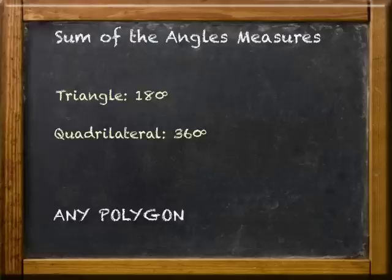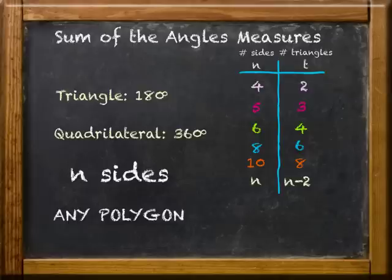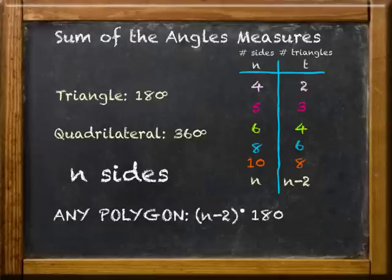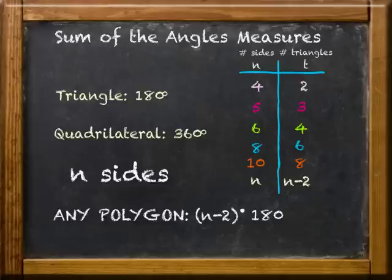Well, if the polygon has n sides, then remembering back from the table we just did, it contains n minus two triangles. And since each triangle contains 180 degrees, you'd have n minus two of those 180 degree figures. Written mathematically, it would be the quantity n minus two times 180. And there it is. An algebraic expression for the sum of the angle measures in any polygon, where n equals the number of sides.